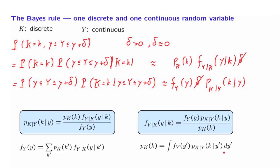This version of the total probability theorem has not been proved so far, but it is not hard to derive. If we fix the value of K, the conditional PDF must integrate to 1 over Y. Since there is no Y in the denominator, the integral of the numerator divided by the denominator must equal 1, which means the denominator equals the integral of the numerator over all Y's — which is exactly what this expression states. Next we will consider one example for each of these two cases of the Bayes rule that we have just derived.